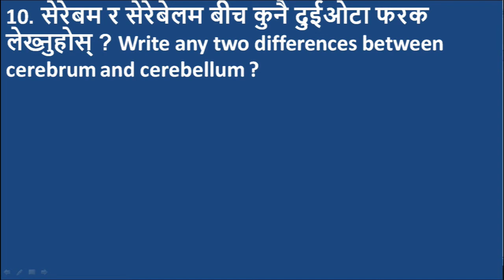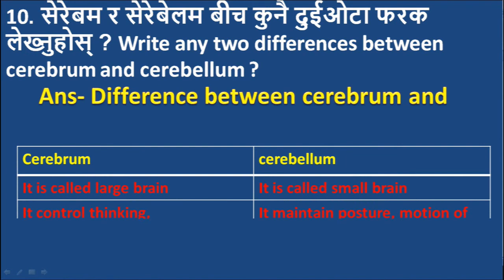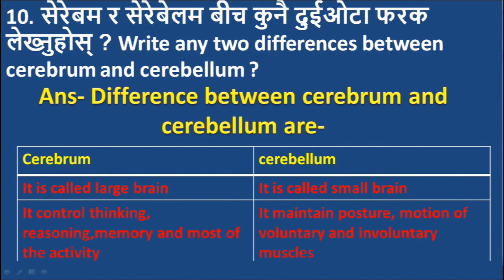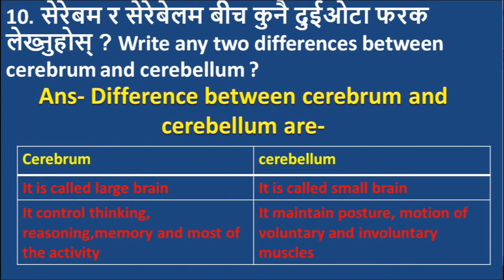Question 10: Differences between cerebrum and cerebellum. Cerebrum is called the large brain; it controls thinking, reasoning, memory, and most mental activities. Cerebellum is called the small brain; it maintains posture and controls the motion of voluntary and involuntary muscles.